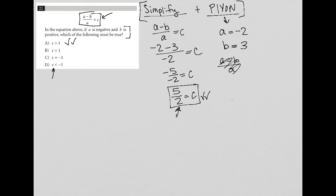So choice B says that C equals one. Well, that's not true. So I just figured out something where C does not equal positive one. Choice C says C equals negative one. So for the same reasons, that's also not true, because we found that C equals five halves.